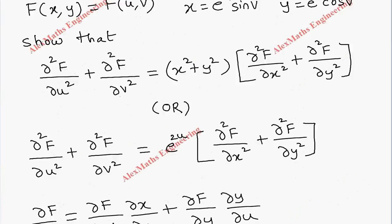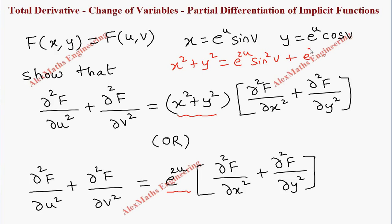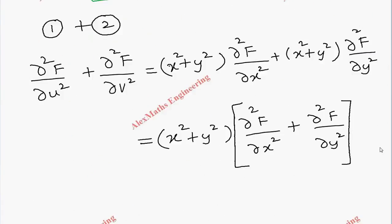There is also another part where instead of x² + y², we have e²ᵘ. Taking x² + y² = (eᵘ)²·sin²v + (eᵘ)²·cos²v = e²ᵘ·(sin²v + cos²v) = e²ᵘ, since sin²v + cos²v = 1. So we replace x² + y² with e²ᵘ, giving ∂²f/∂u² + ∂²f/∂v² = e²ᵘ·(∂²f/∂x² + ∂²f/∂y²), which completes the proof.